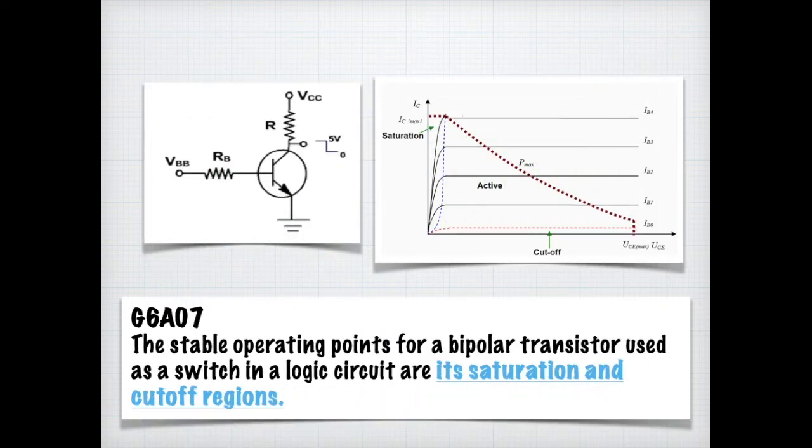You might get a question on your exam that asks, what are the stable operating points for a bipolar transistor used as a switch in a logic circuit? As you can see by the chart, you can see that there's a saturation point and a cutoff point. For the exam, you need to know that the stable operating points for a bipolar transistor used as a switch in a logic circuit are its saturation and cutoff points. And that's how you get the on and off state.